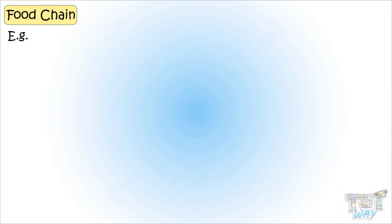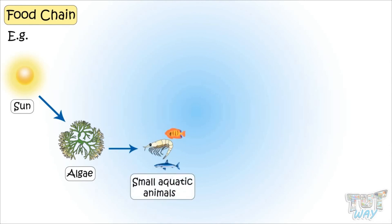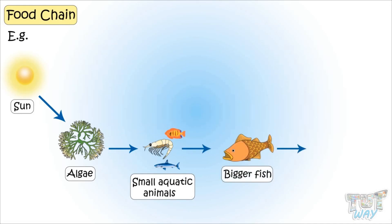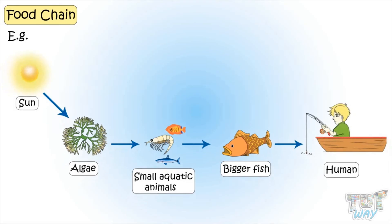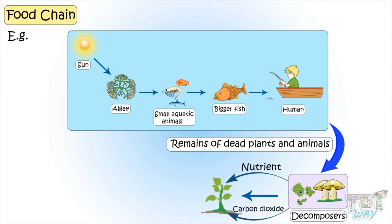Here is another example of a food chain. Algae, a green color aquatic plant, grows using the energy from the sun. Algae is eaten as food by many small aquatic animals and fish, which are then eaten by bigger fish, and fish is hunted by humans for food. Again, the waste material from all animals and plants is decomposed by microorganisms as nutrients and carbon.